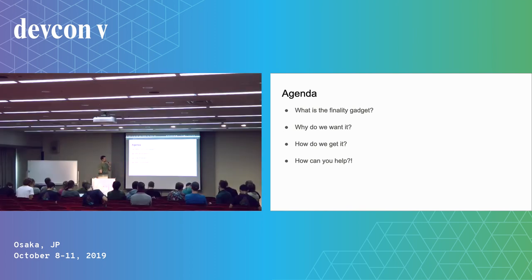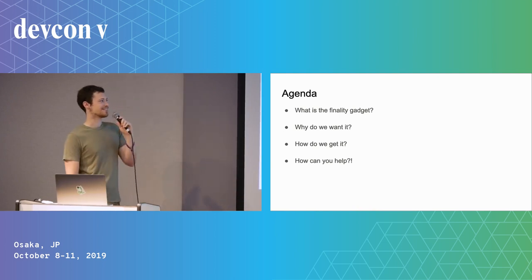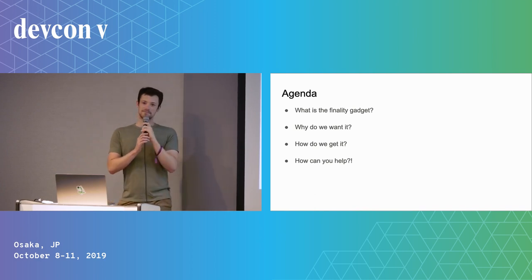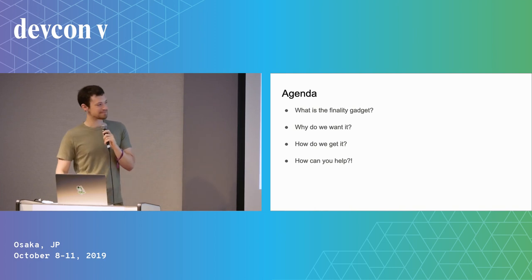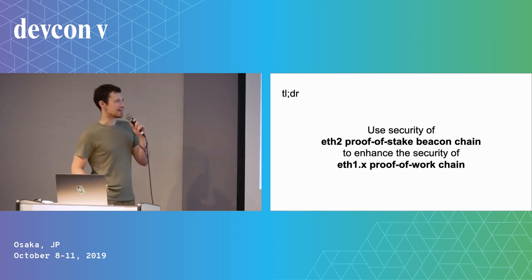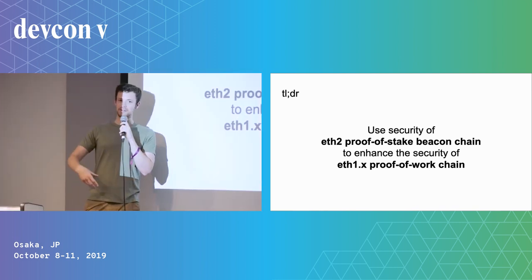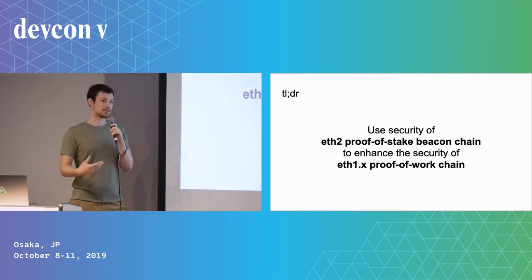I'll try and show you why we want it and hopefully there are some fun reasons. Then we'll talk quickly about how we get it, and we'll wrap up by seeing how you can help. The super high level TLDR is using the proof of stake beacon chain from ETH 2.0 to enhance the security of the proof of work chain we have today.